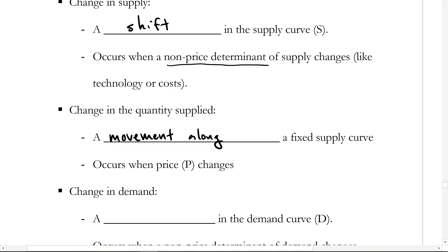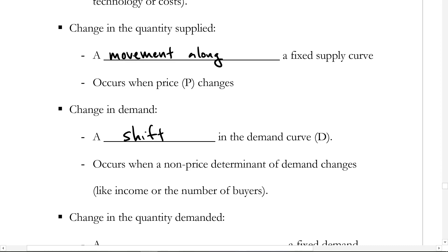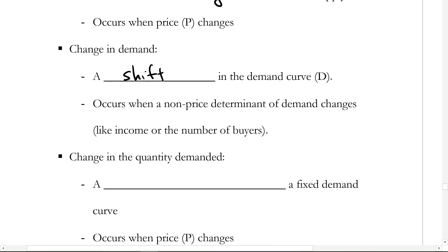The same thing applies to demand. A change in demand is a shift in the entire curve, coming from our demand curve shifters. A change in the quantity demanded is a movement along a fixed demand curve, and that occurs when the price changes.